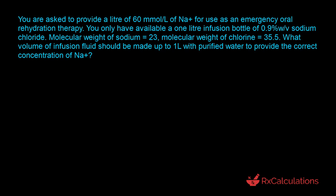So let's take a look at what is actually happening here. We are required to determine the correct concentration of sodium cation in the solution, and we are getting the sodium cation from a 0.9 percent weight by volume sodium chloride solution — also known as normal saline. We need to know the actual amount of sodium chloride needed to provide the required 60 millimole per liter concentration.